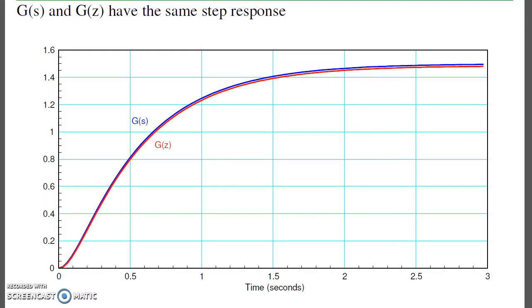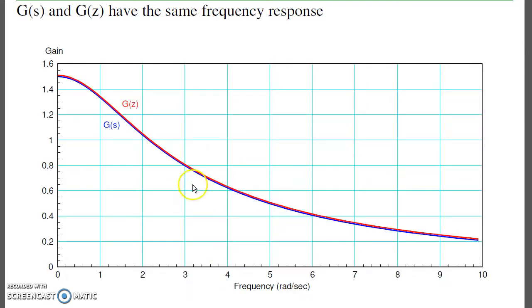If the two filters are the same, they should have the same step response and frequency response. From signals and systems, time and frequency are related. If it's the same filter, they should have the same response. If I plot the step response of the two filters, you can see they're basically the same. Plot the frequency response—they're basically the same. So these two filters are basically the same. G(z) is the discrete-time equivalent of G(s).